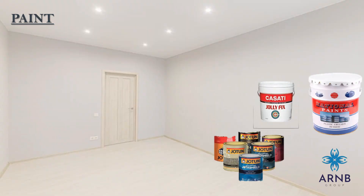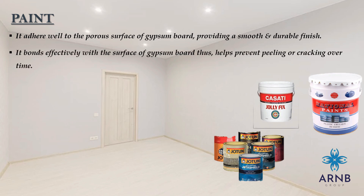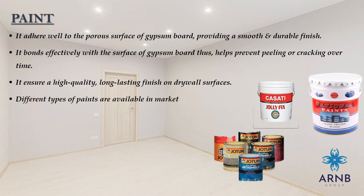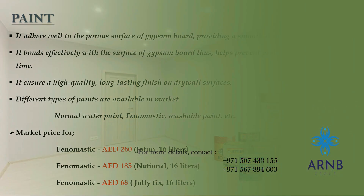Paint adheres well to the porous surface of gypsum board, providing a smooth and durable finish. It bonds effectively with the surface, helping to prevent peeling or cracking over time, ensuring a high-quality, long-lasting finish on drywall surfaces. Different types of paints are available in the market, such as normal water paint, emulsion paint, and washable paint. Market price for emulsion paint: Jordan brand 16 litres is 260 AED, National brand 16 litres is 185 AED, and Jollifex brand 16 litres is 68 AED. So that's all for today.